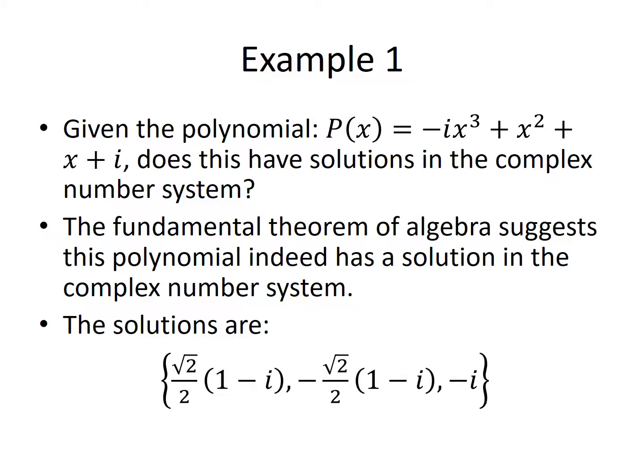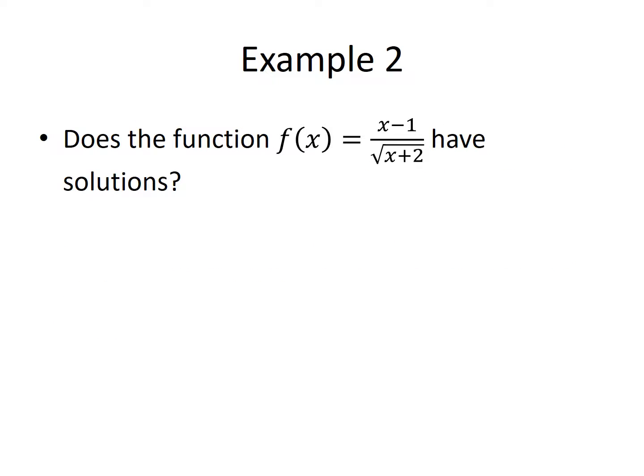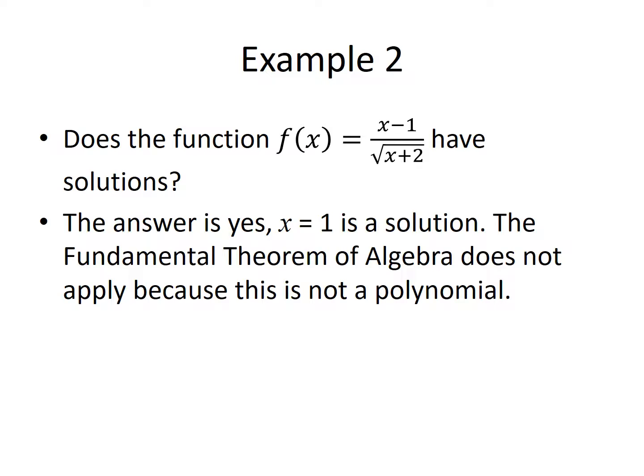These are the three solutions to this particular polynomial. Our second example asks if the function x minus 1 divided by the square root of x plus 2 has solutions. The answer is yes — x equal 1 is a solution. But the fundamental theorem of algebra does not apply, because this is not a polynomial. This is a ratio of a polynomial with a radical function, so it doesn't fit the form required by the theorem.